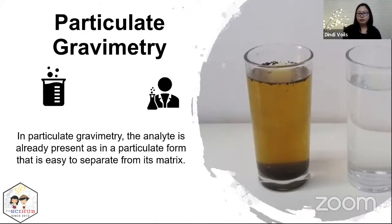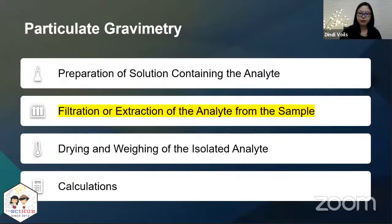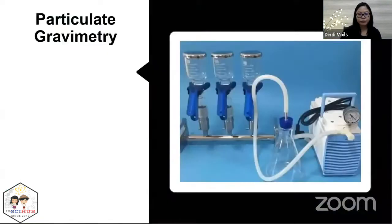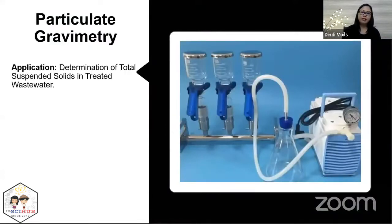In particulate gravimetry, your analyte is already in a particulate form, so it is easier to separate it from your matrix. Therefore, the separation step is either filtration or extraction of the analyte from the sample.